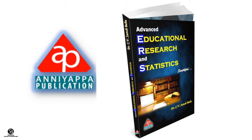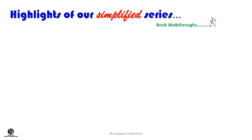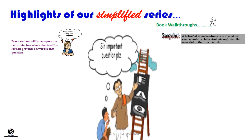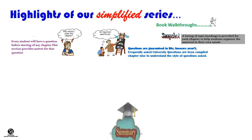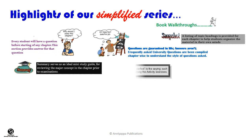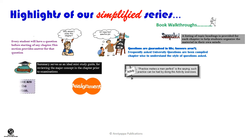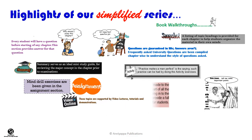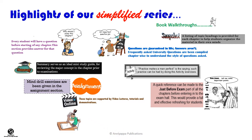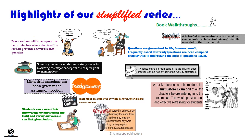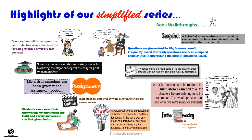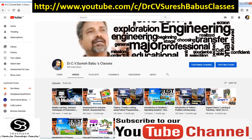For more information, refer to our book: Advanced Educational Research and Statistics Simplified by Dr. C.V. Suresh Babu. Highlights of our simplified series include: Why should I learn this chapter, Snapshot, Frequently Asked Questions, Summary Activity, Assignment, Video Online, Just Before Exam, Test Yourself, Keywords, and Further Readings. Subscribe to our YouTube channel for more tutorial videos.